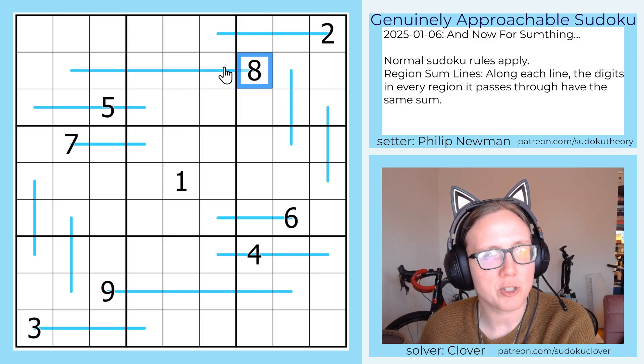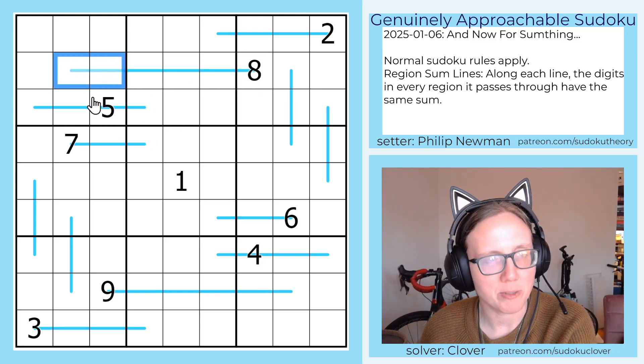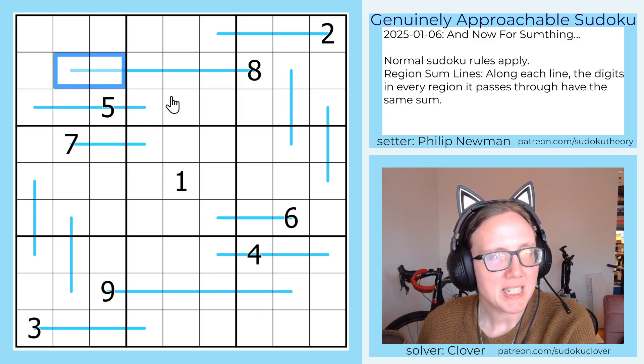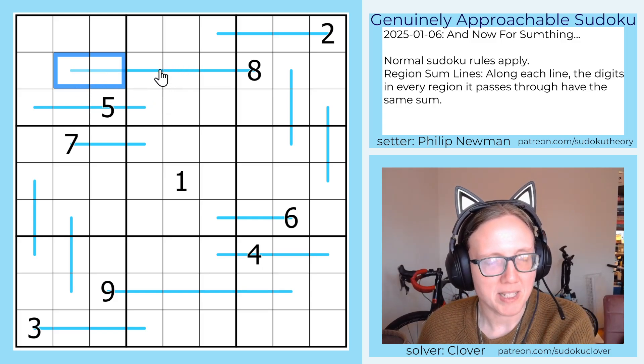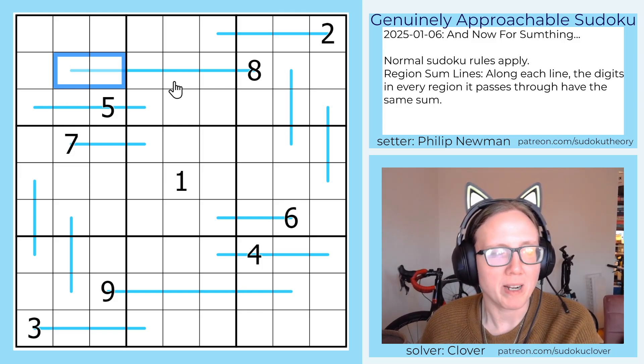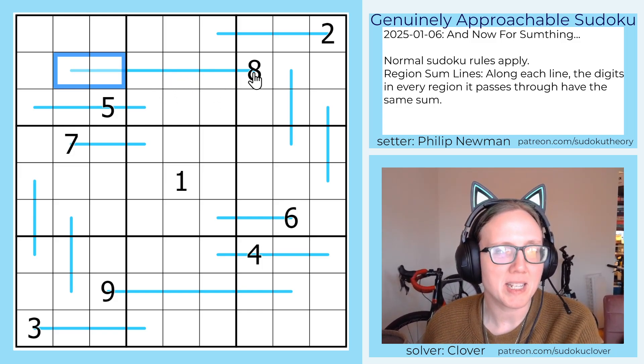Region sum lines are these blue lines that pass through multiple regions in the grid. This line goes in this region, and in this region, and in this region. Within each of those regions, the sum of the digits on the line has to be the same. You don't necessarily know right away what that sum is, but in this case on this line we do know it.